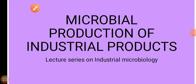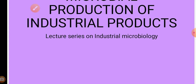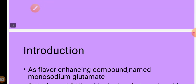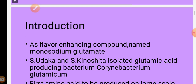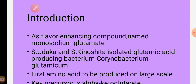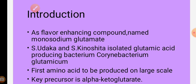Welcome back to another video lecture from our lecture series on industrial microbiology. Today the product we are going to discuss is the production of glutamic acid. Glutamic acid is widely used as a flavor-enhancing compound in the food industry, and it is used in its salt form, which is monosodium glutamate, MSG.